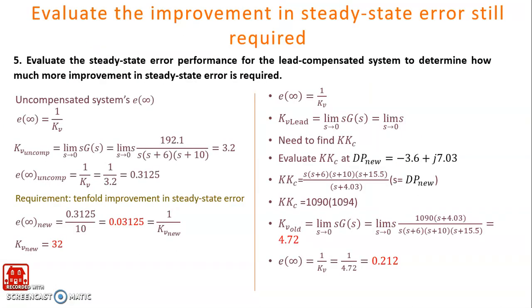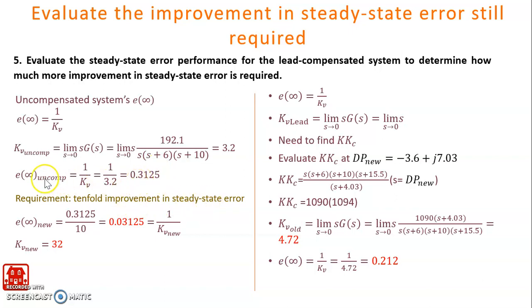The next step is to evaluate the steady state error performance for the lead compensated system to determine how much more improvement in steady state error is required. Based on the uncompensated system, using the gain K equal to 192.1, we determine the uncompensated velocity static error constant Kv equal to 3.2. From this, we determine the steady state error for the uncompensated system. Based on the design requirement of a 10-fold improvement in steady state error, we divide the uncompensated steady state error by 10 to get the new steady state error, and from this determine the new velocity static error constant equal to 32.